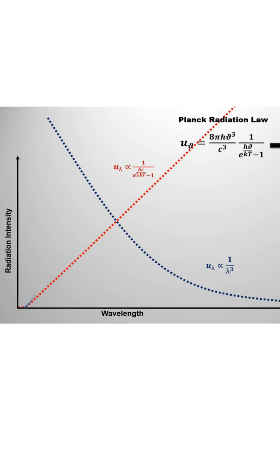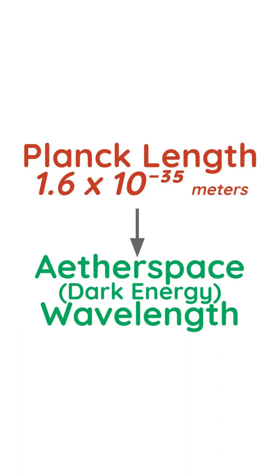When applied to the Planck radiation law, this leads to the Planck distribution factor, which suppresses the volume of light particles as they approach the wavelength of the etherspace, called the Planck length.